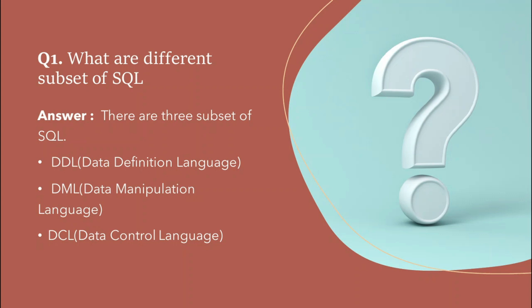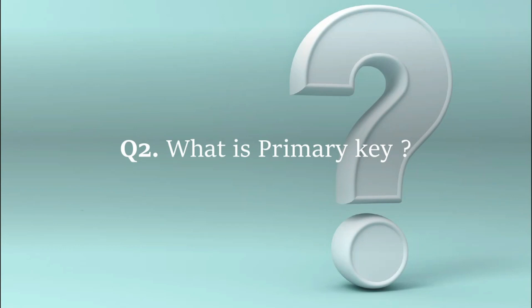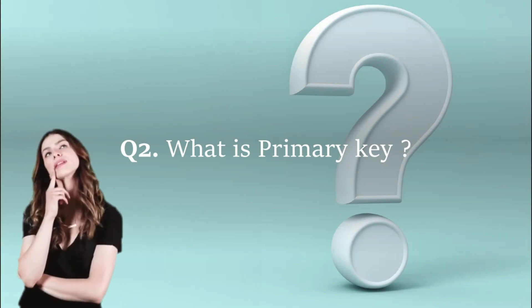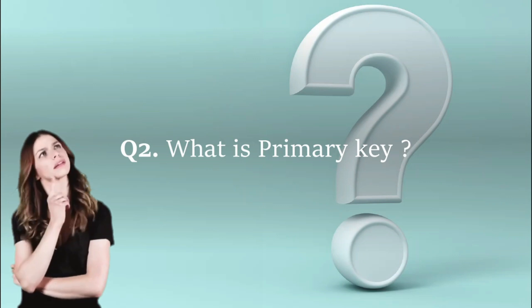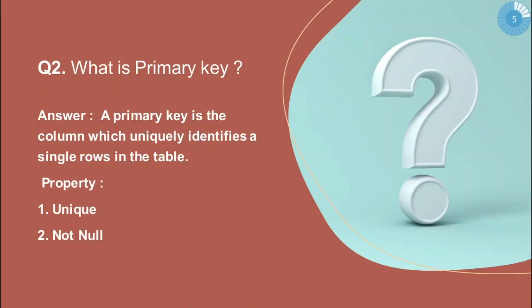The next question is: what is a primary key? A primary key is the column which uniquely identifies a single row in the table. What are the properties of a primary key? It should be UNIQUE and it should be NOT NULL. These are the very important properties of a primary key.